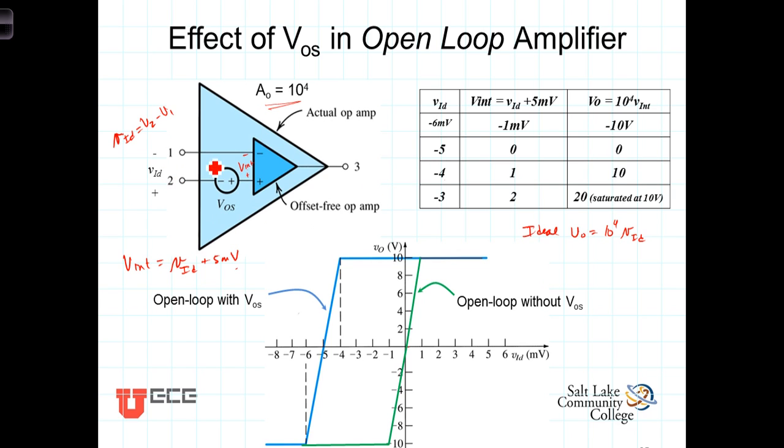At VID equaling negative 6 millivolts, the internal voltage would be negative 6 plus 5 would be a negative 1 millivolt times the 10 to the 4th gives us the output voltage of negative 10 volts. So with this input voltage, negative 6 millivolts, we're going to be saturating the amplifier at its negative rail voltage.